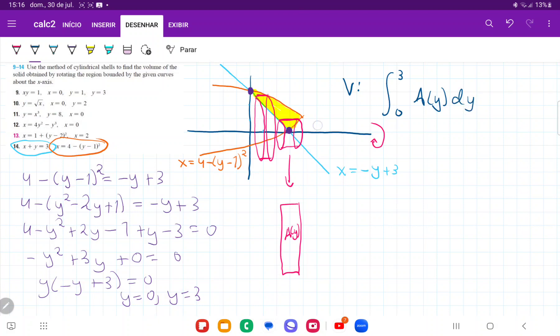So our volume is going to be the sum of all these areas as a function of y times dy. And the reason that it is dy is because we're summing it up vertically.